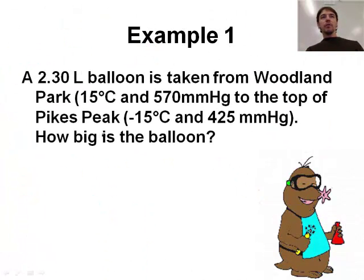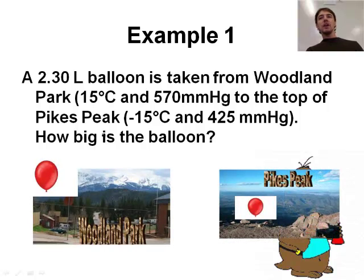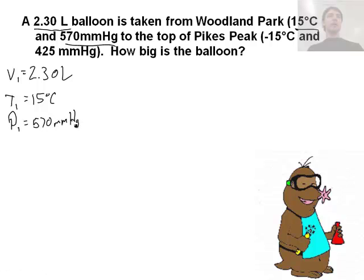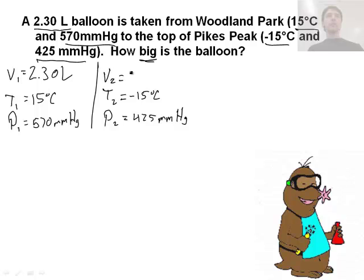Let's do a few example problems. First we have a 2.30 liter balloon taken from Woodland Park at 15 degrees Celsius and 570 mmHg, brought to the top of Pike's Peak at negative 15 degrees Celsius and 425 mmHg. How big is the balloon? That's a volume - v1 is 2.30 liters, t1 is 15 degrees C, p1 is 570 mmHg. We have t2 which is negative 15 degrees Celsius, p2 which is 425 mmHg, and v2 is our unknown. Notice that moles are not referenced in this problem so we simply ignore the moles.